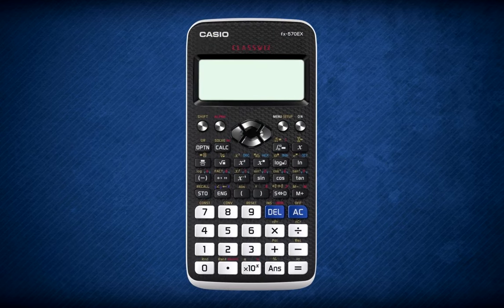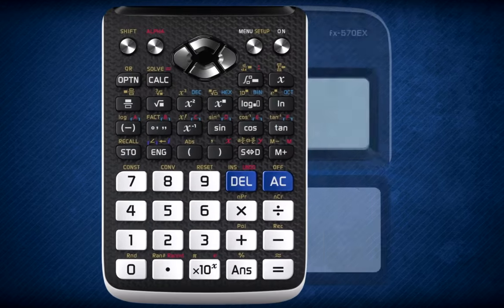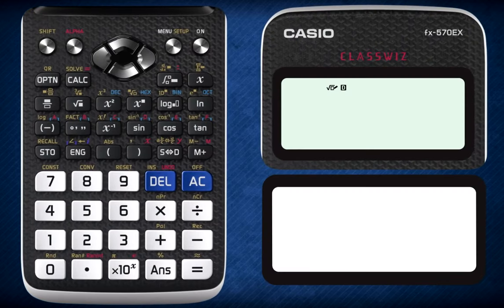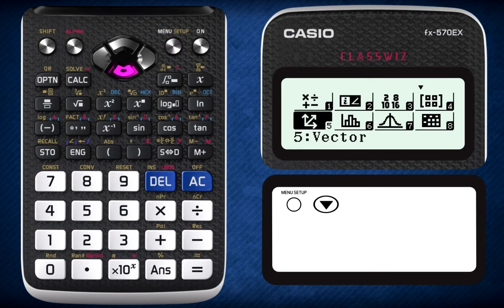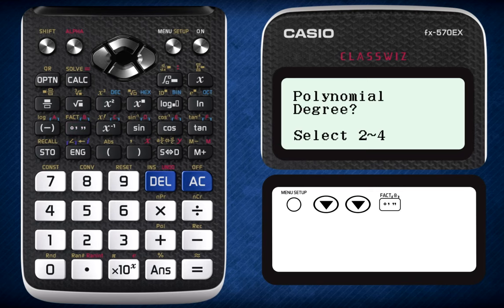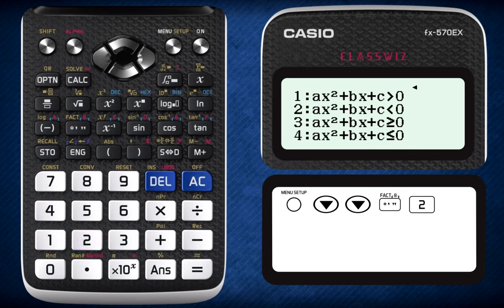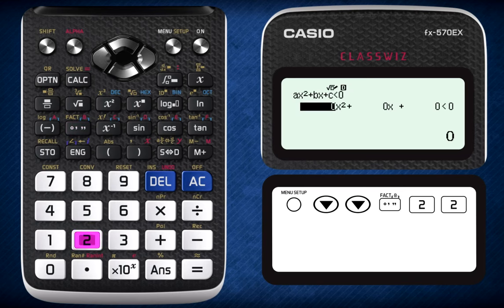Solving inequalities is an all-new feature on the Casio ClassWiz. To do this, press menu, scroll down twice, select option B which is the degree and minute button, select 2 for a second degree polynomial, and then select 2 again for inequality.